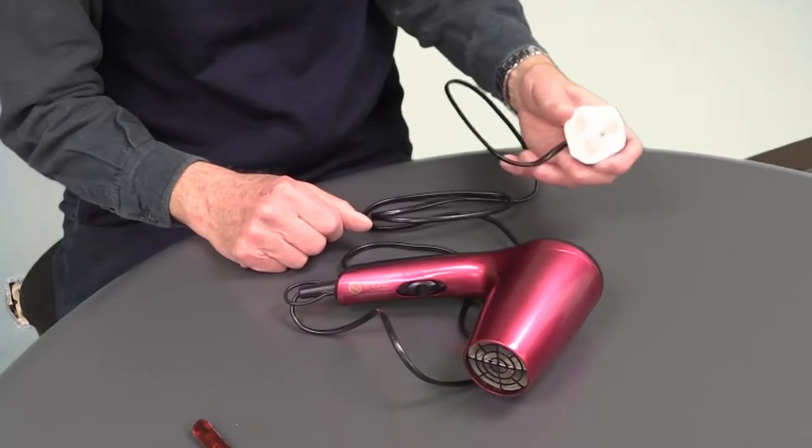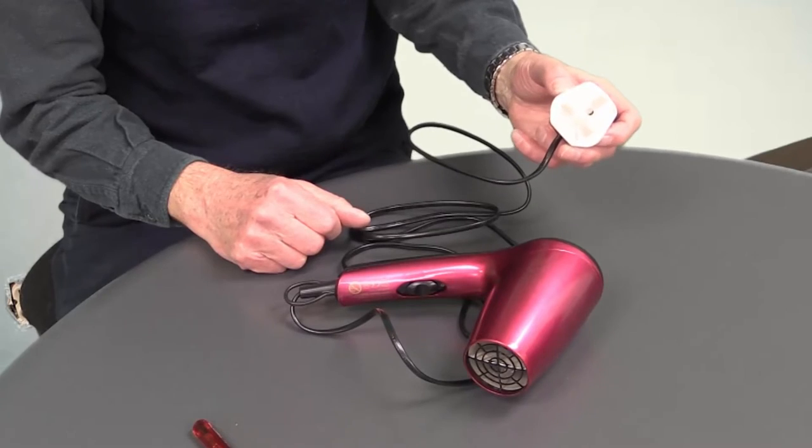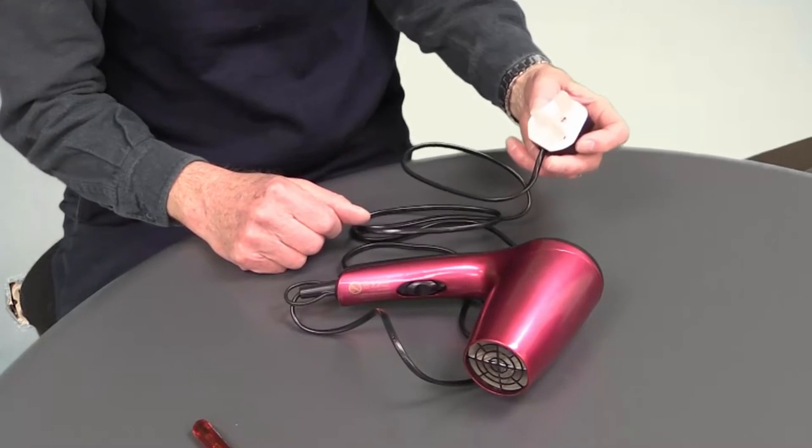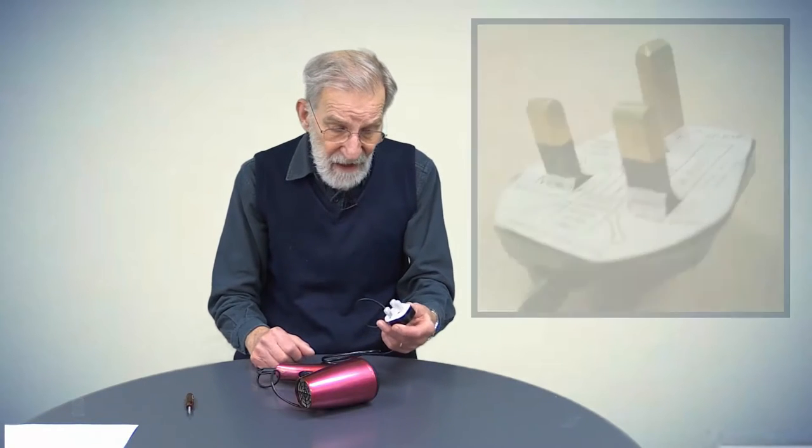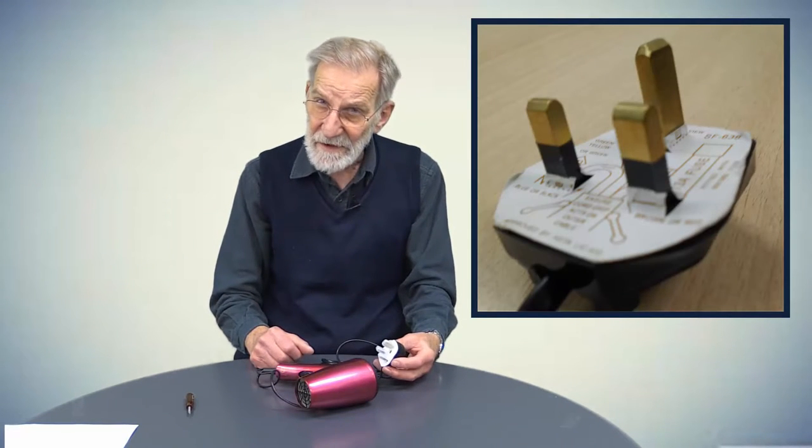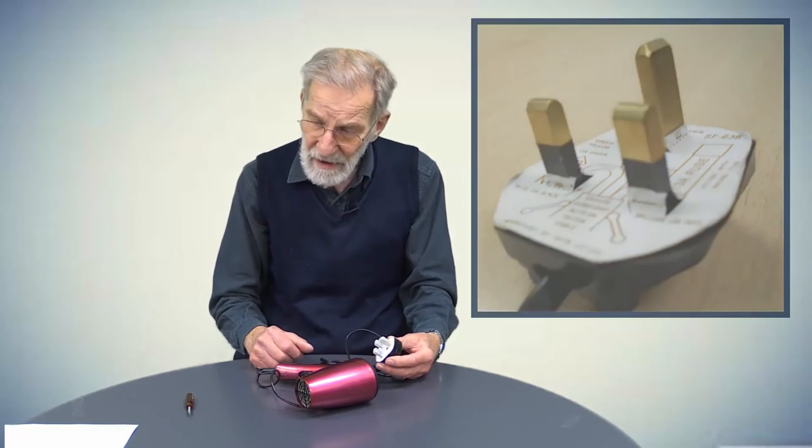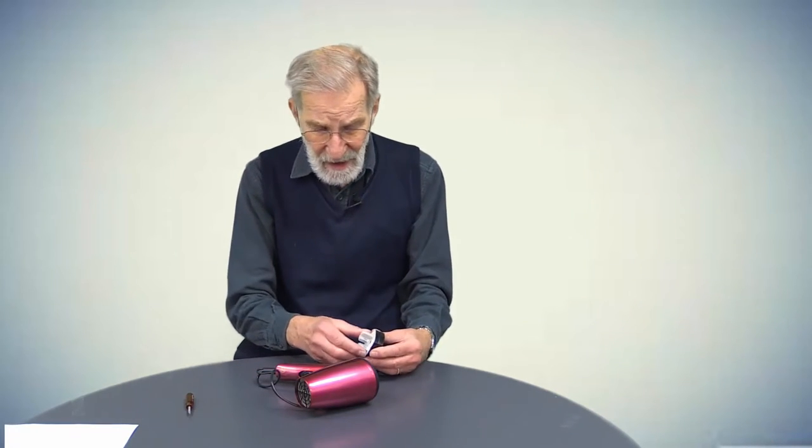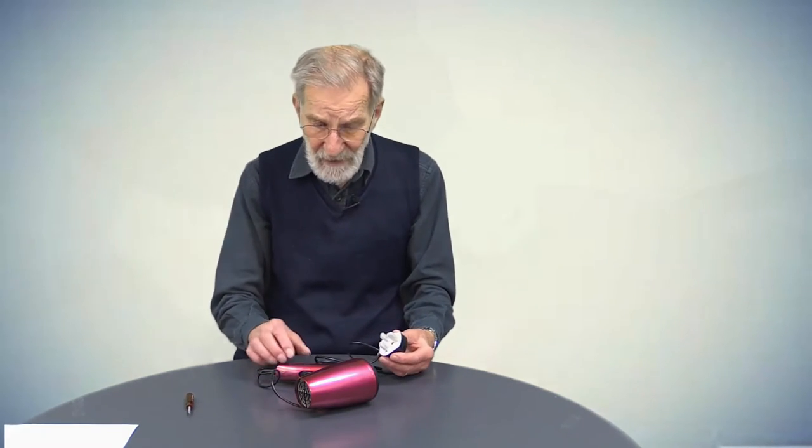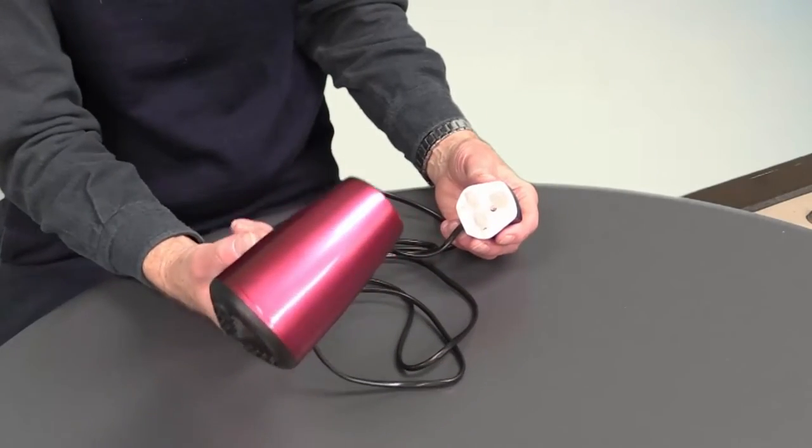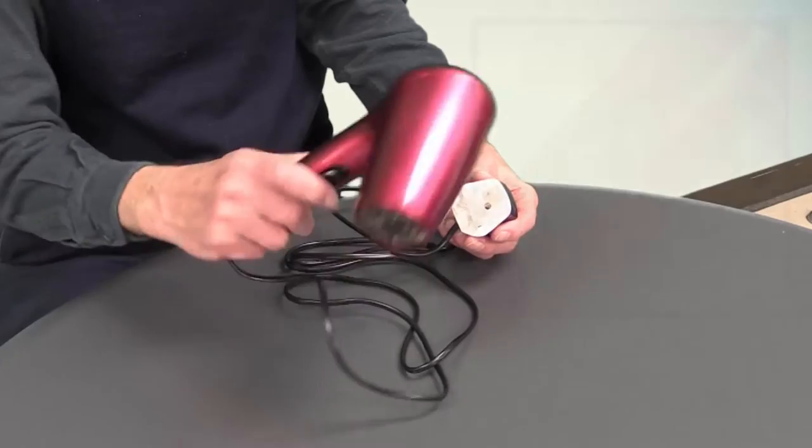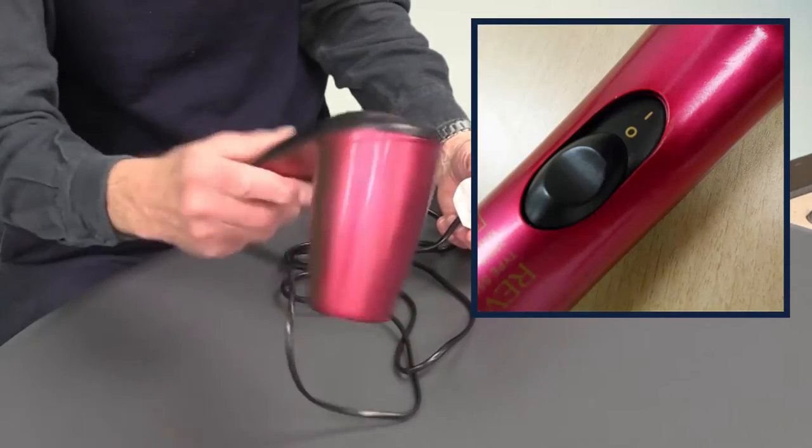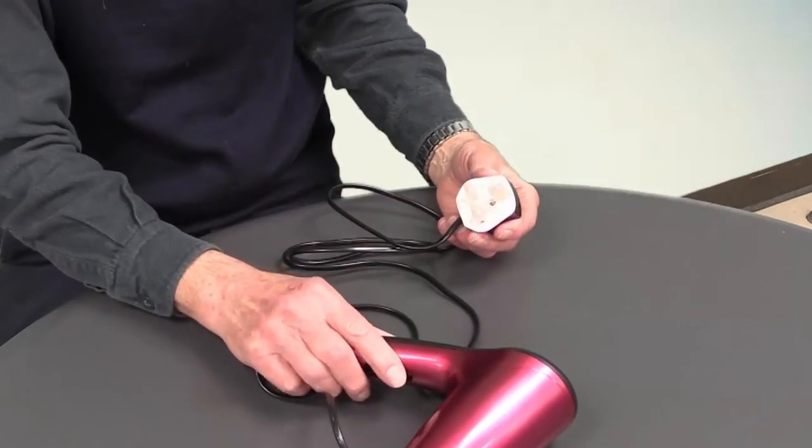This happens to be one with a UK plug, not a North American one, because I got this from my wife and she didn't want me to play with her regular hair dryer, so I got this one. But it should work just the same. We see a very simple device, two-color, two pieces of plastic, a switch, cord, and so forth. We'll take that apart and look at it in detail.